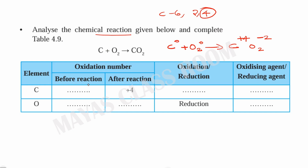In the case of carbon, before the reaction the oxidation number is 0, and after the reaction it goes to minus 2 — so that is a reduction. Carbon is reduced, meaning carbon is the oxidizing agent. The reducing agent also appears in this reaction.